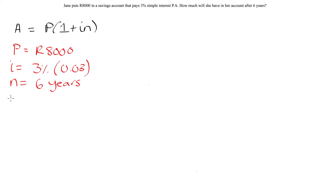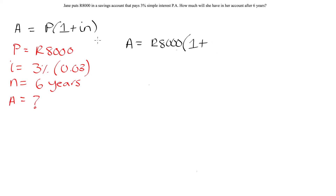Our A is the amount she will have in her account after those 6 years — that is our unknown, what we are trying to calculate. Setting up the equation by plugging in everything we know, we get: A is equal to 8,000 Rand multiplied by 1 plus 0.03 times 6 years. This is the calculation we now need to carry out.